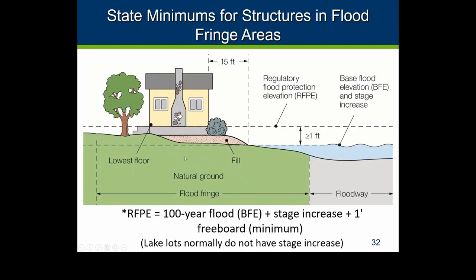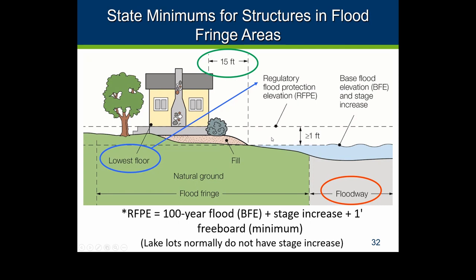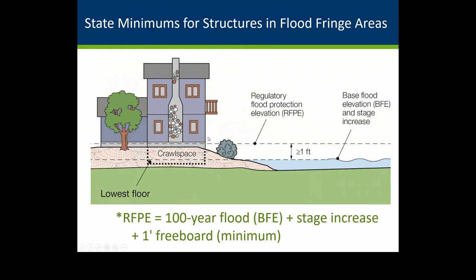The main requirements when building on fill are: no fill in the floodway, and the lowest floor must meet the Regulatory Flood Protection Elevation — the flood elevation with any stage increase plus the foot of freeboard. For residential structures there's also a requirement for 15 feet of fill pad at the RFPE minus one foot. So basically at the flood elevation with the stage increase, the fill can come straight down or at an angle, but 15 feet out it still needs to be at that elevation. A crawl space below the RFPE would not be allowed for new construction.